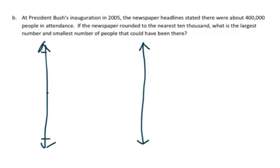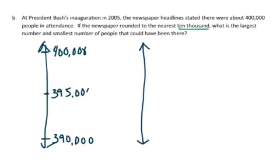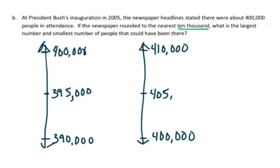They did say the nearest 10,000. So for this first number line, I'm going to say this is 400,000 here at the top. And if I'm going by 10,000, then it would be 390,000 here. The midpoint is 395,000. And then on this vertical number line, I'm going to start with 400,000 here. I'm going by 10,000, so the top would be 410,000. And the midpoint for this one is 405,000.